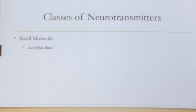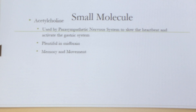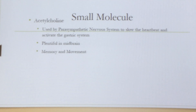Under the small molecule class, the first one is acetylcholine. This is used by the parasympathetic nervous system. It slows the heartbeat and reactivates the gastric system when the body has been in fight-or-flight. So when you get into fight-or-flight and your heart starts beating real fast and gastric activity is inhibited, the acetylcholine helps to bring that back to homeostasis. It's plentiful in the membrane and it also helps in memory and movement.